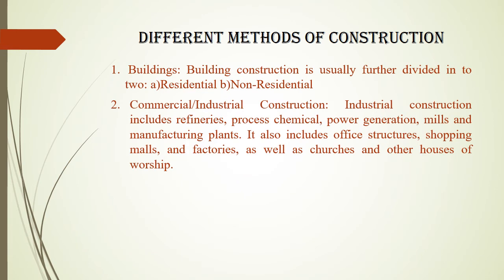The second type is commercial or industrial construction. Industrial construction includes the construction of refineries, power generation plants, mills and manufacturing plants. It also includes office structures, shopping malls and factories, as well as churches and other houses of worship.